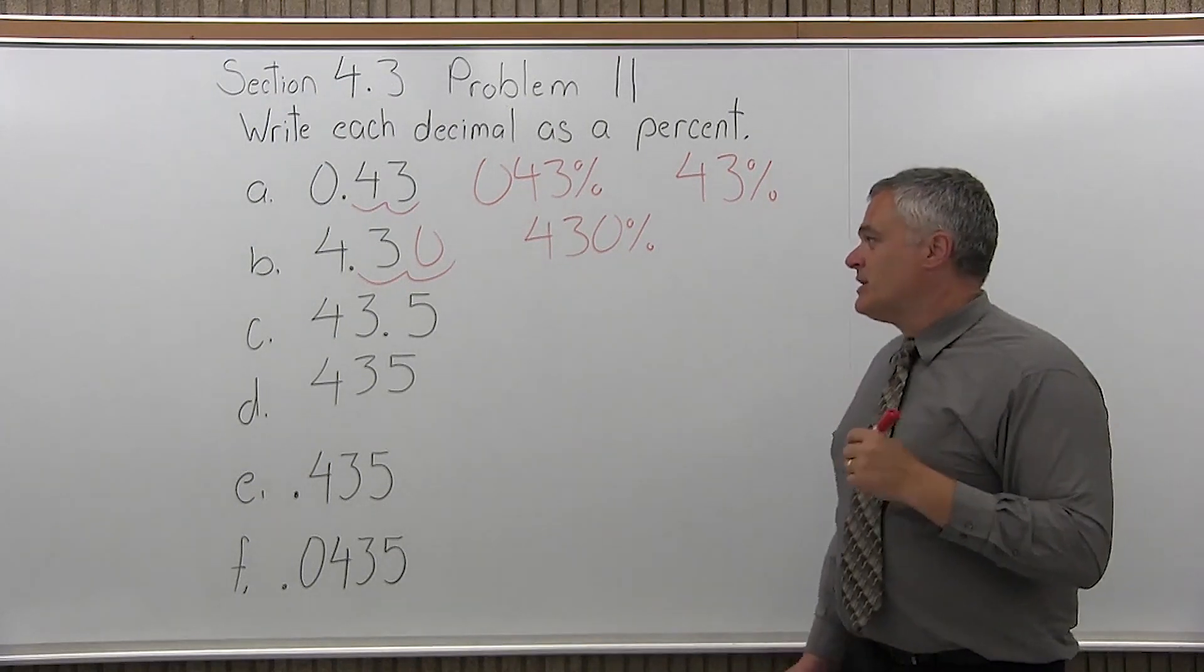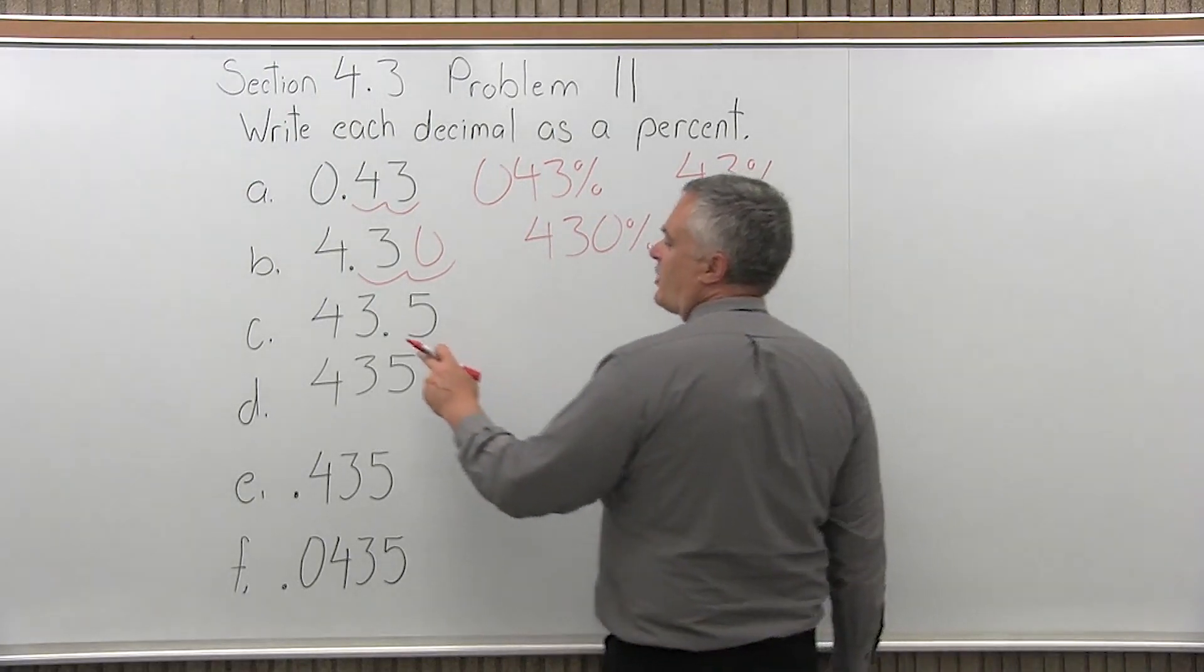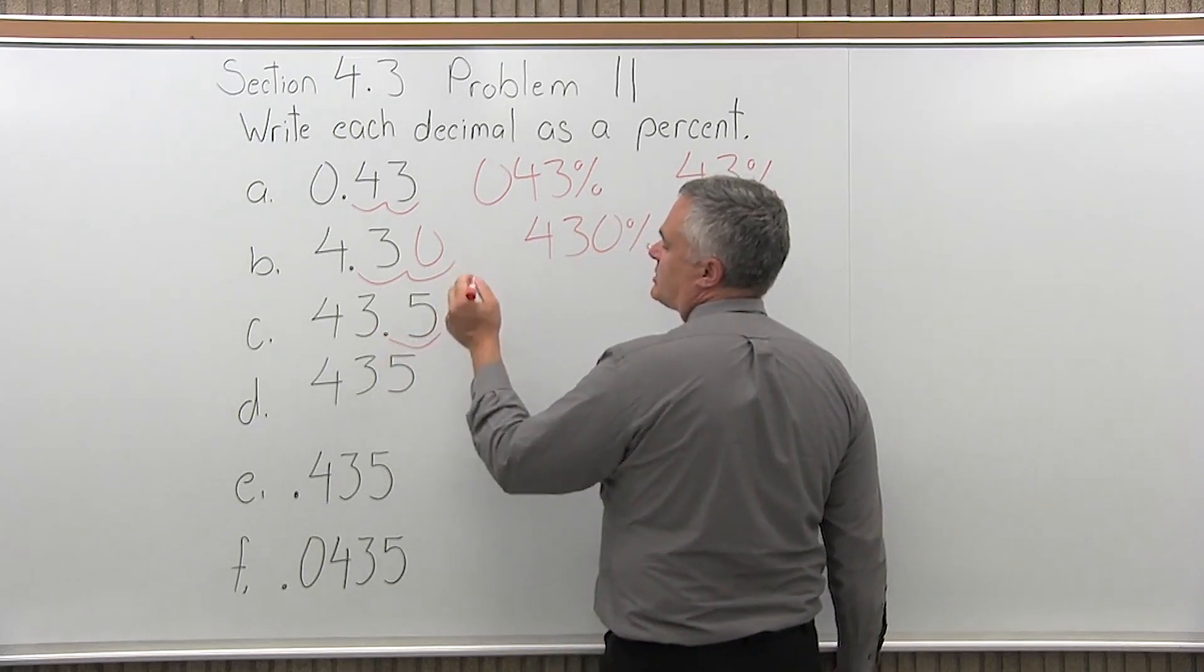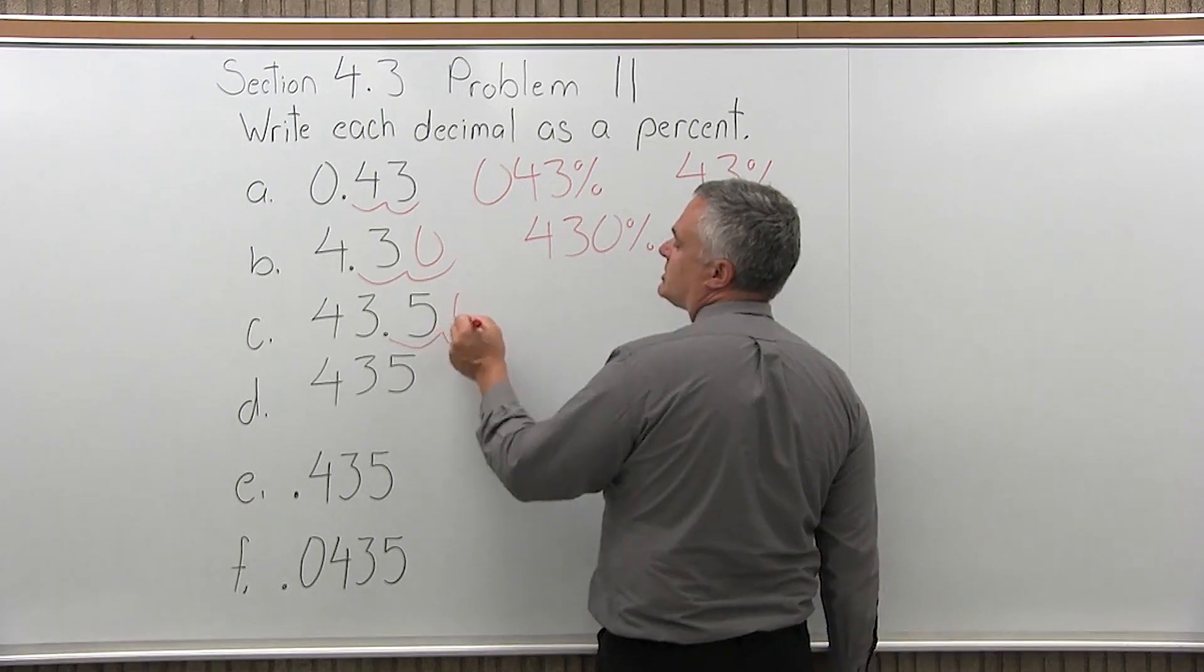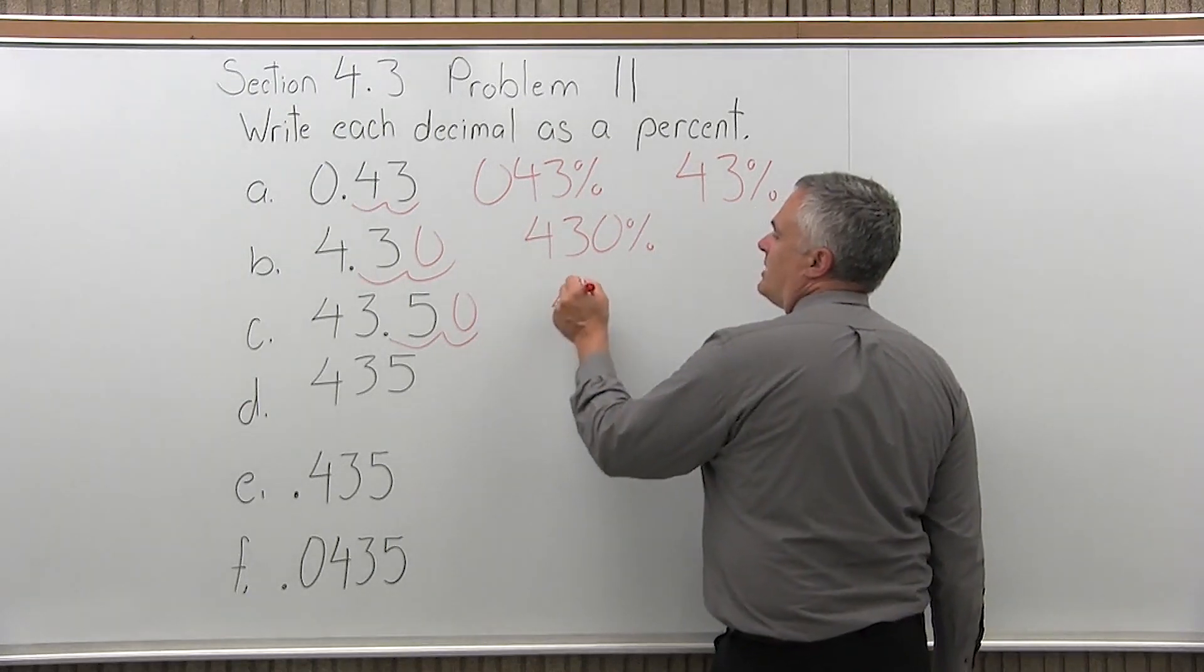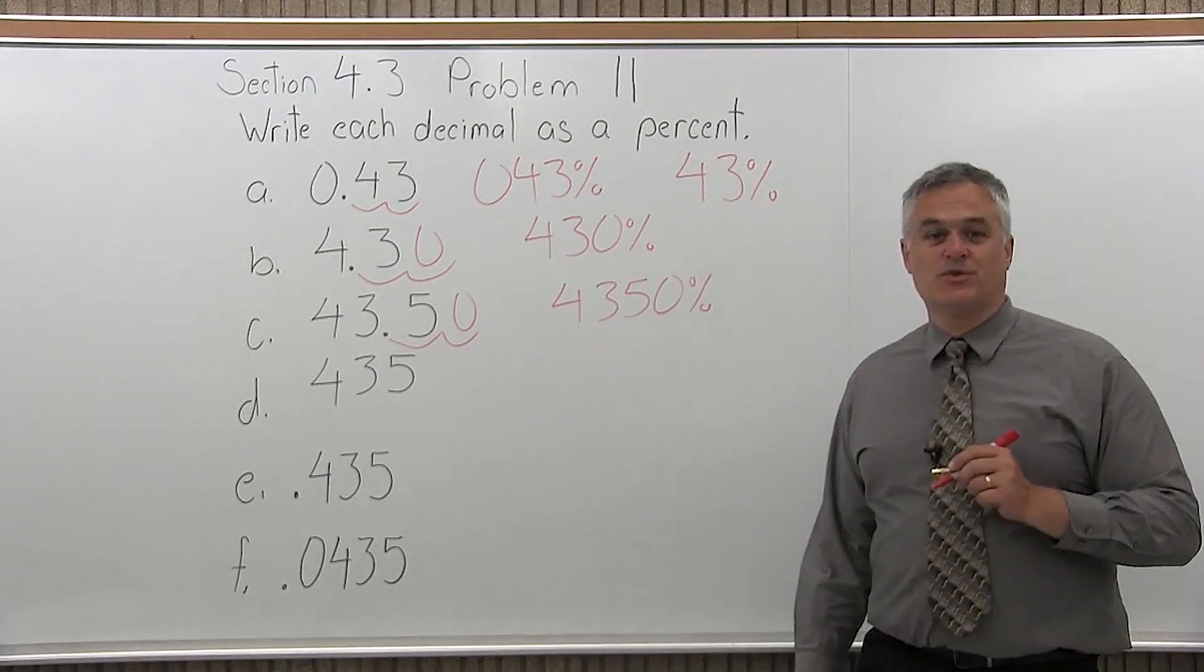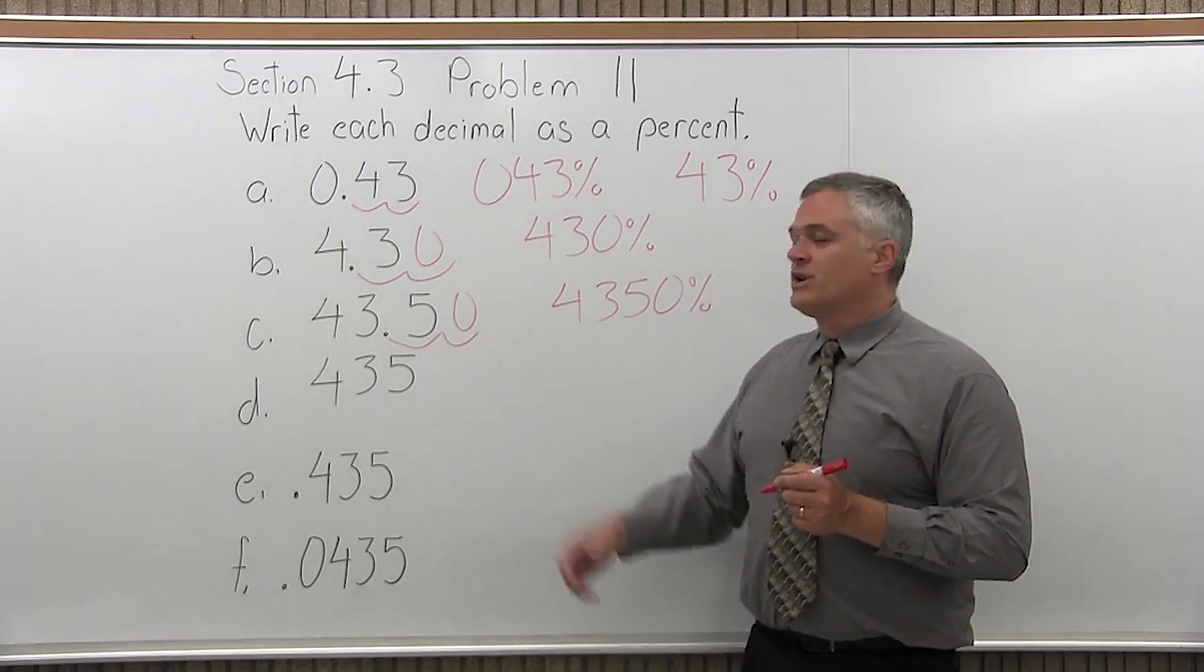Part C, 43.5, write it as a percent. Take the decimal where it's written, between the three and the five. To make it a percent, move two positions to the right. One position comes after the five, then you've run out of room, but you go another position and create a blank spot which you fill in with a zero. So it would be 4,350 percent. That's a big percentage, but that is the percent equivalent of 43.5.